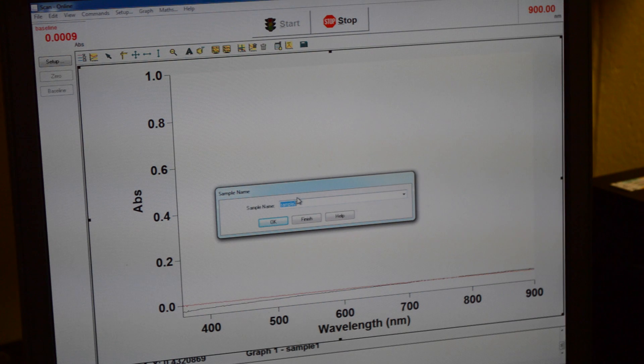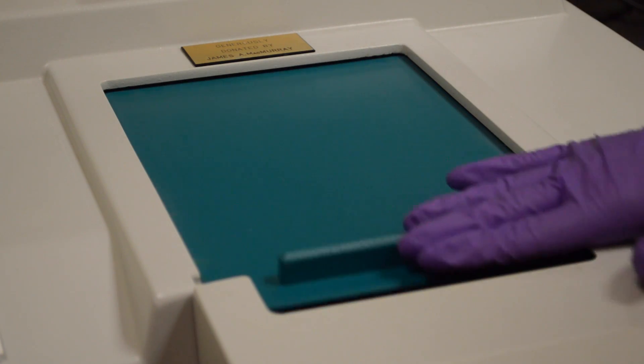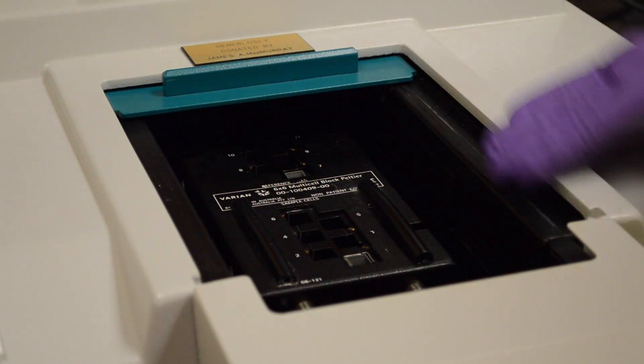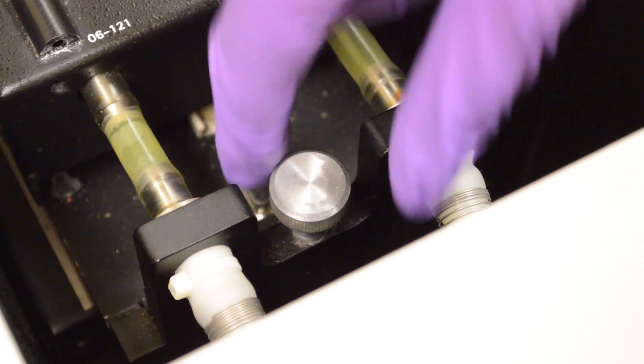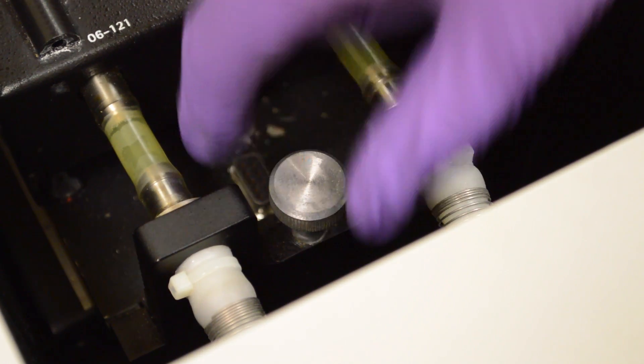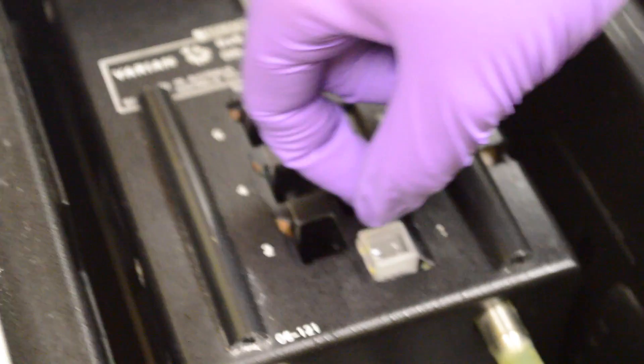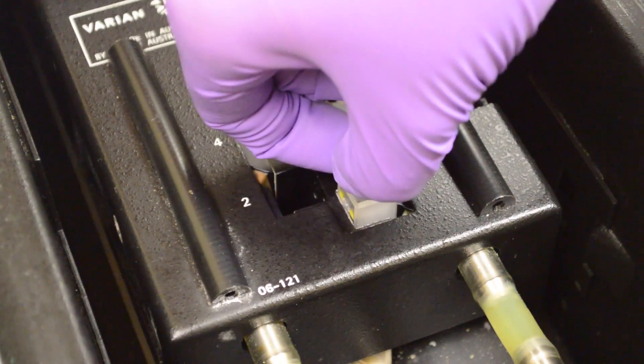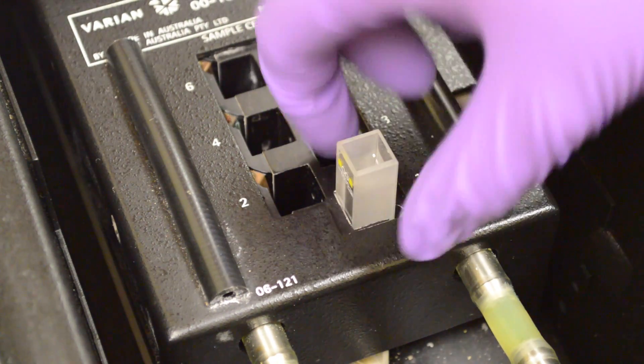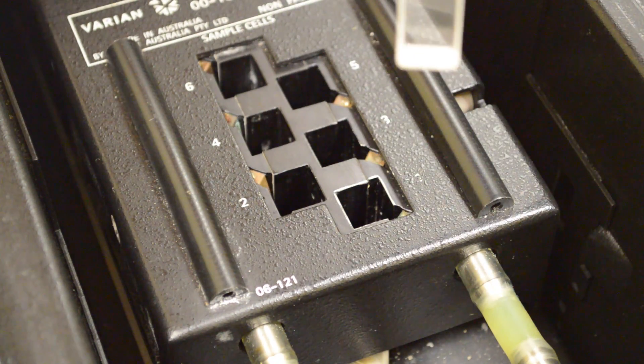From here we are going to put the sample into the UV-vis spectrometer. You're just going to slide the top of it open and to get out the sample there is a little silver knob here. You're just going to lift up and that will pop the cell up so you can retrieve your cuvette. You take it out through the frosted sides the same way you put it in and you can just properly dispose it in a waste bin.